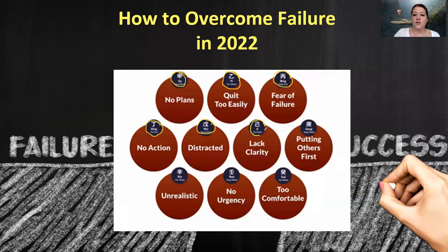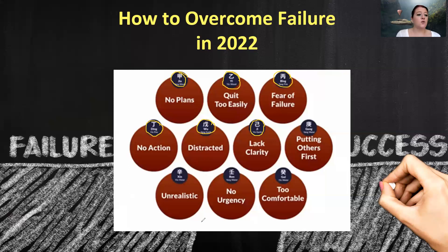If your month stem is Ji Earth — the Yin polarity of Earth — then you lack clarity about what you truly want to achieve and what your goals are. If you don't know what your goals are, you're not likely to achieve anything at all, or you'll achieve something that doesn't feel fulfilling. The first thing you need to do is get clarity over what you want. Sit down, maybe meditate on it, or talk to a business partner or colleague. What do you actually want to do? Get clarity of your goals and objectives, and once you have this clarity, you can move forward and take the right steps towards success.